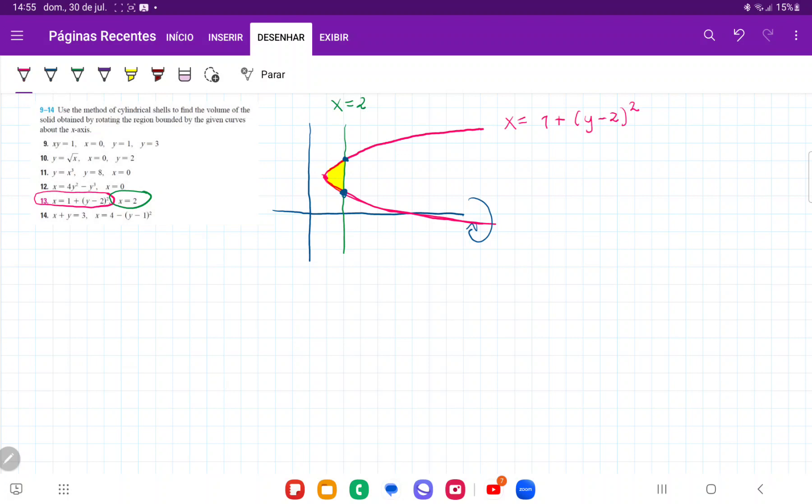We're going to set these curves equal to each other. So we have that 1 plus (y-2)² is equal to 2. I'm going to bring the 2 over to the left side, so we have that (y-2)² + 1 - 2 is equal to 0.